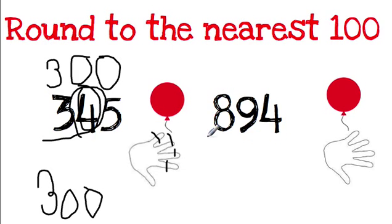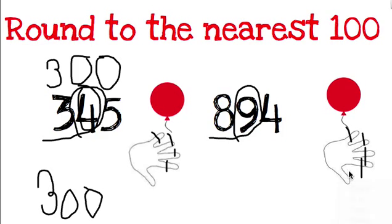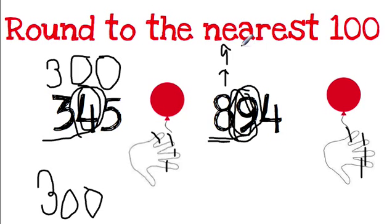Let's try this one. Rounded to the nearest 100 — I underline the 100s and circle next door. Holding onto my balloon, I count: 1, 2, 3, 4, 5. My balloon is going up. So the number I underlined is going to go up by 1, making it a 9. This becomes a 0 and anything after it becomes a 0. So 894 rounded to the nearest 100 is 900.